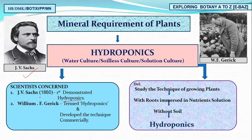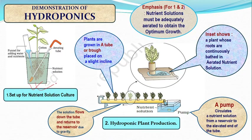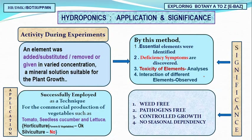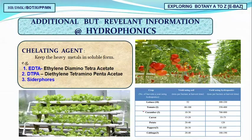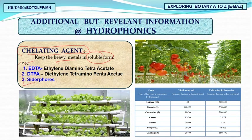We studied Sachs, who demonstrated hydroponics for the first time in 1860, and Garic, who commercialized hydroponics. We also studied tissue/tray culture and the application and significance of hydroponics — applicable for horticulture but not silviculture. We also studied chelating agents, which keep heavy metals in soluble form; examples are EDTA, DTPA, and Sequestrene.